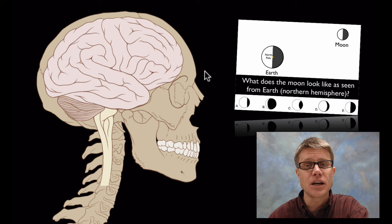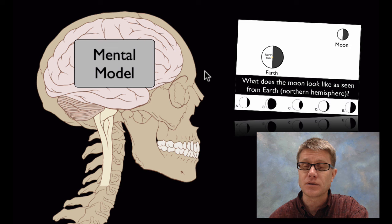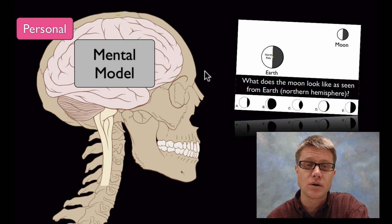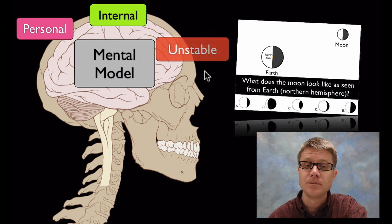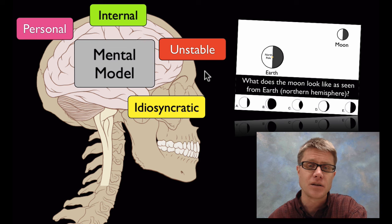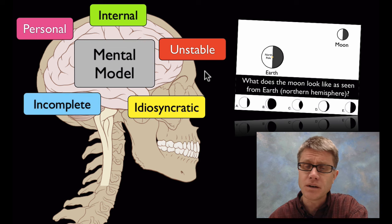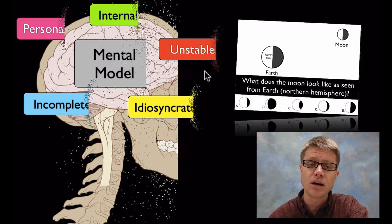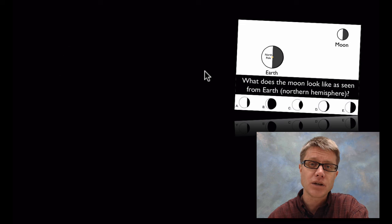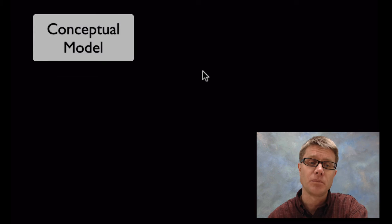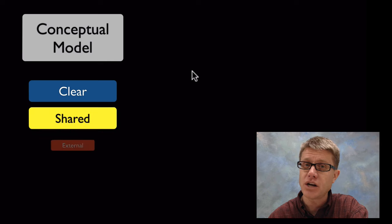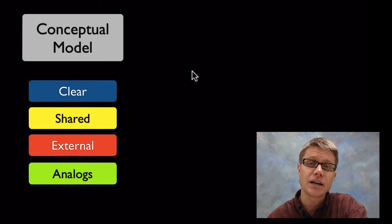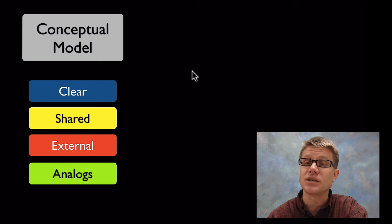To solve problems and understand the world, we use mental models — and they're great, that's the way that you work. The problem with mental models is that they're just yours, yours alone. They're inside your brain. They're unstable, they're idiosyncratic — that means they're going to be different in every individual. They're also lots of times incomplete or ineffective. So the mental model is not what we're talking about when we're talking about modeling. What we're talking about are physical, conceptual models. Those are clear, shared by everyone, external, and they act as an analog — an analogy for how phenomena work or how designs work.